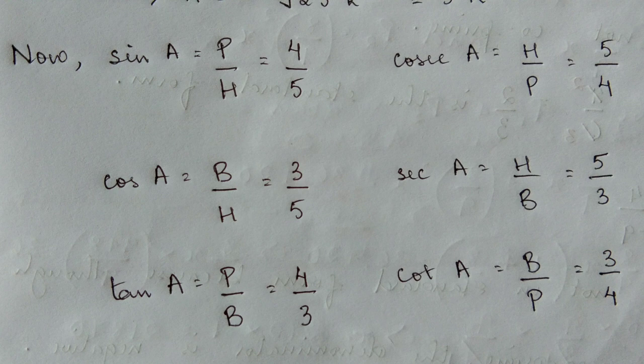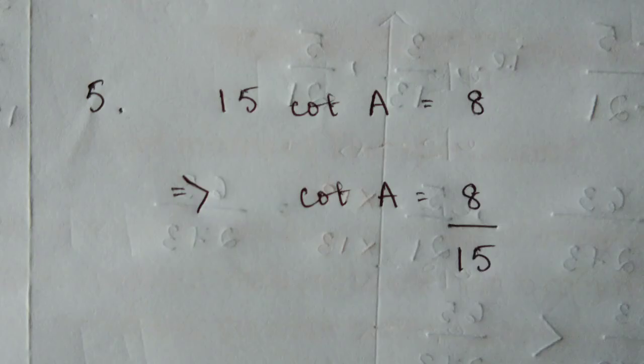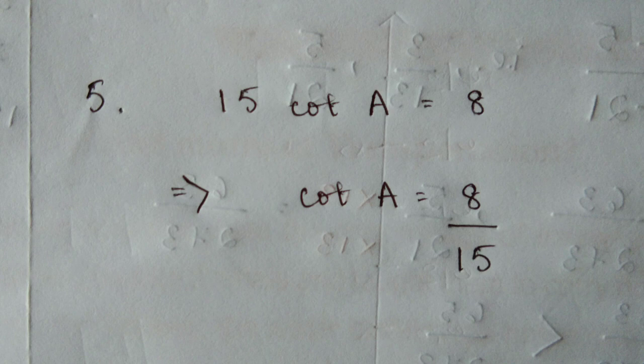Similarly, in this manner you can do question number 3, 4, 5, and 6. However, for question number 5 where it says 15 cot A equals 8, you need to divide both sides by 15, giving you cot A equals 8 by 15.